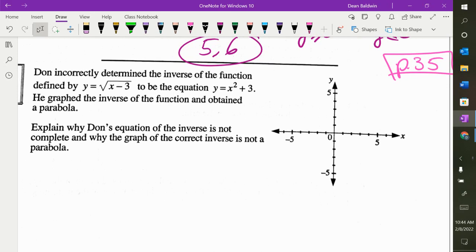Don incorrectly determined the inverse of a function defined by y = √(x-3) to be y = x² + 3. Let's start with this. What does this graph look like? y is equal to root x minus 3.